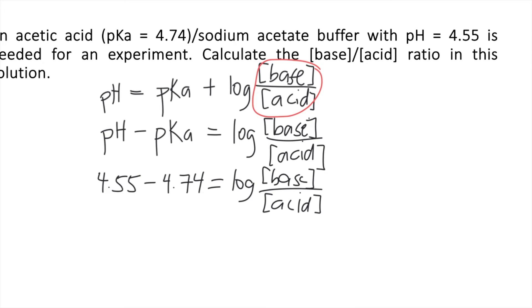4.55 minus 4.74 equals negative 0.19. That equals log of the concentration of base divided by the concentration of the acid.